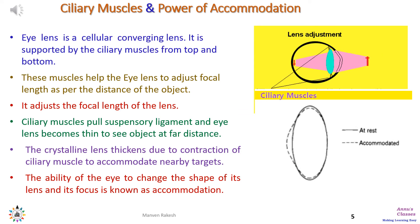The crystalline lens behind the pupil is the main component of the eye. This lens is a cellular converging lens supported by the ciliary muscles from the top and bottom, and these muscles, with the help of the suspensory ligament, are able to change the focal length depending on the distance of the object. As shown in the figure, the lens becomes thick when the object is close by and becomes thin as the object moves farther. This ability of the eye to change the shape of its lens and focal length is known as accommodation.